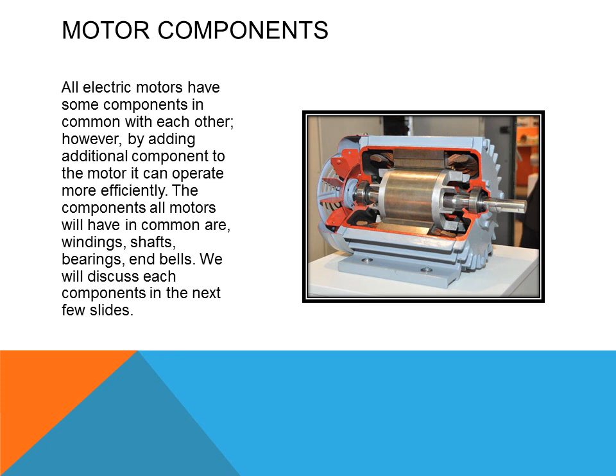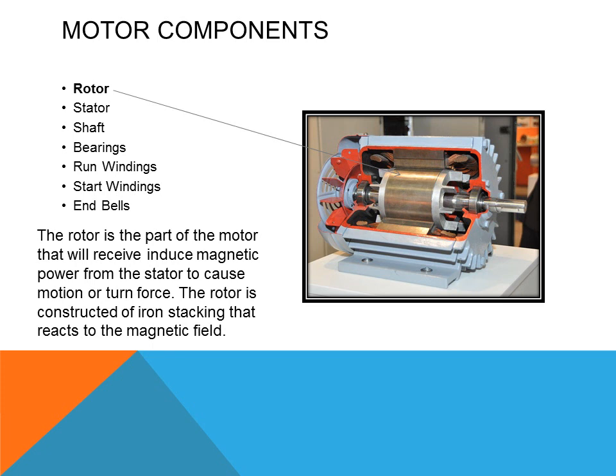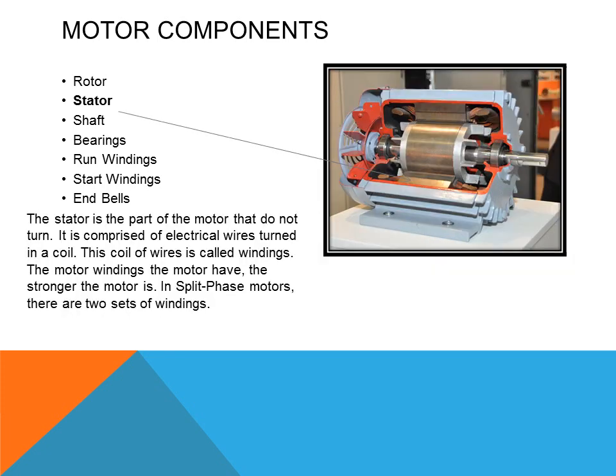In this cutaway motor, you can see some of the components that are exposed from this motor being cut open to show you the internal components. The rotor is the part of the motor that rotates. It is made out of iron stackings that will receive the magnetic field or induced magnetic field from the stator. So the rotor is the part of the motor that will receive induced magnetic power from the stator and cause motion or turning force. The stator is stationary and it is where the windings of the motor are connected.